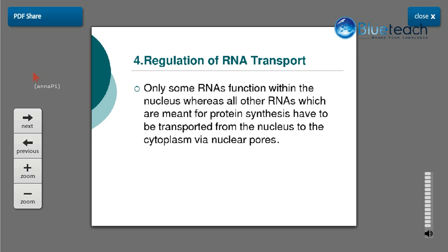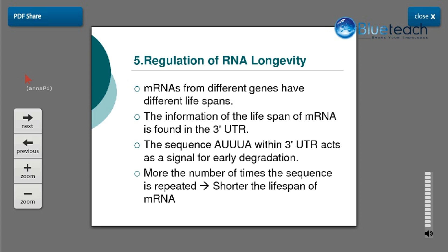The next point is regulation of RNA transport. Once the RNA has been synthesized, its fate depends upon its function. If a particular RNA is meant for protein synthesis, it will get transported to the cytoplasm via the nuclear pores, where it meets the ribosomes and protein synthesis takes place. Whereas those RNAs not destined for protein synthesis remain within the nucleus. This again decides which kind of protein is being synthesized.